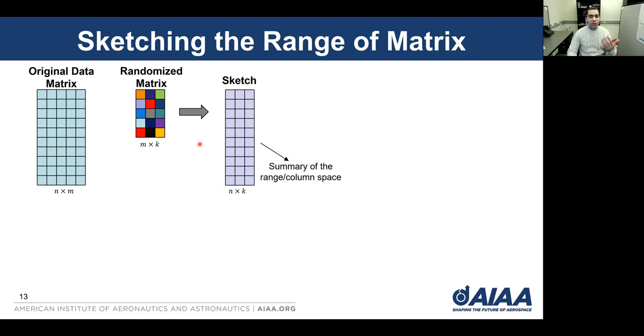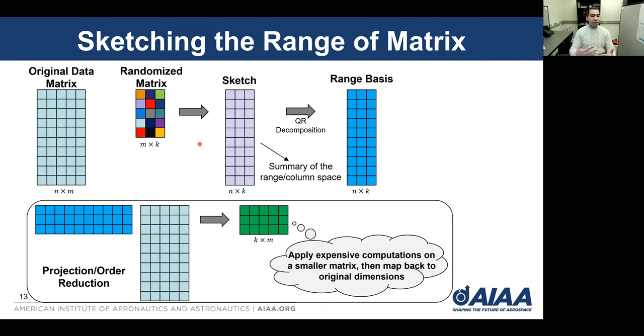Then we perform QR decomposition to obtain an orthogonal basis. We use this basis to project the original matrix onto a smaller subspace. We can perform expensive computations with this smaller matrix. Once we are done, we use the same basis to map the results back to our original dimensions.